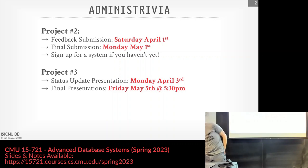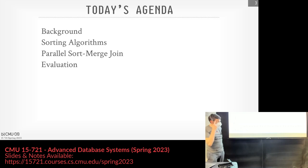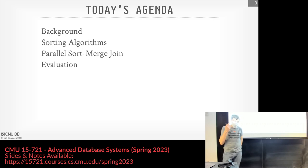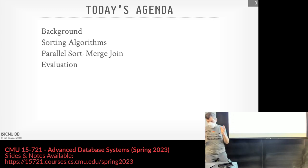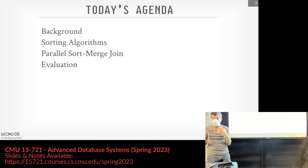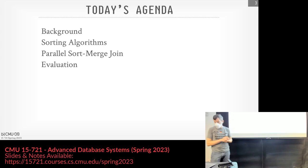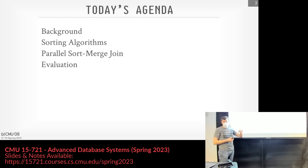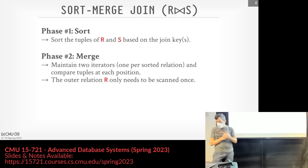Let's get back into the world of databases. Today we're going to talk about sort-merge joins. The main spoiler is that this is almost always going to be inferior to hash joins. Some systems won't implement sort-merge joins at all, but enterprise systems will because there are cases where you want the output sorted on the join key — killing two birds with one stone. I'm also including this because when we talk about worst-case optimal joins on Wednesday, those are essentially sort-merge joins with more than two tables.